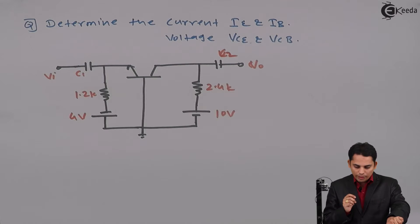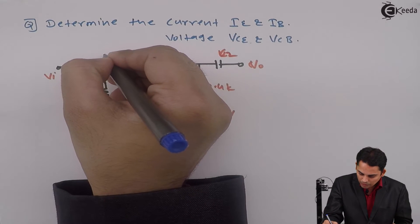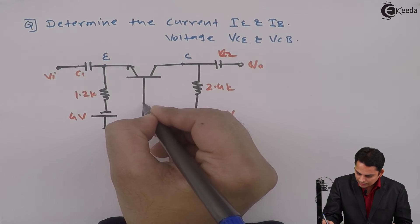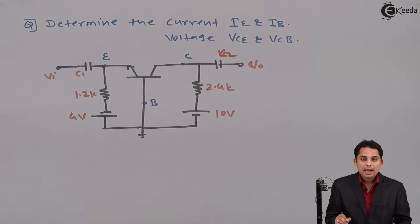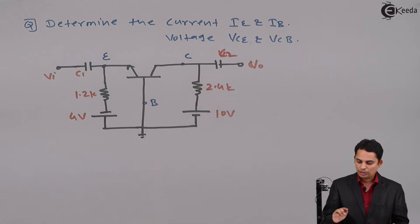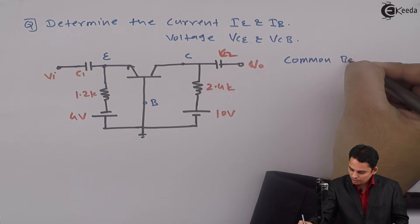We will first try to find out the configuration in this particular circuit. We will mark emitter, base, and collector. This terminal will become your emitter, this is collector, and this is base. As base is common between input and output, it is common base configuration.